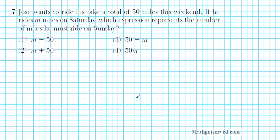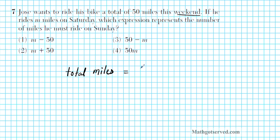Let's take a look at problem number 7. It says, Jose wants to ride his bike a total of 50 miles this weekend. If he rides n miles on Saturday, which expression represents the number of miles he must ride on Sunday? We're basically converting a statement into a mathematical equation. Total miles equals 50.